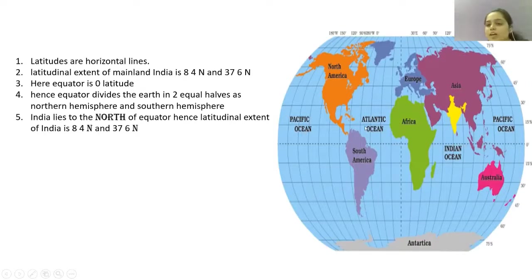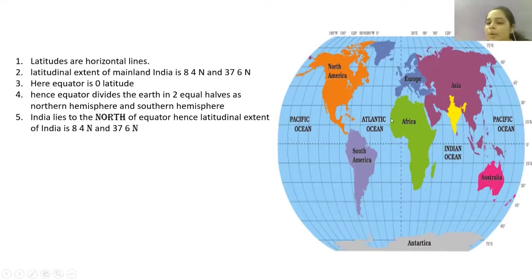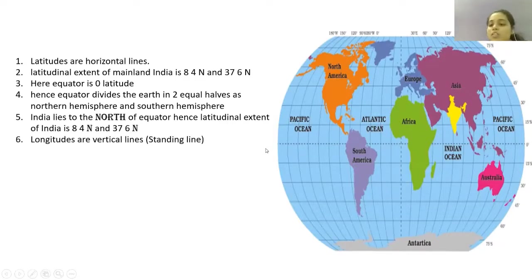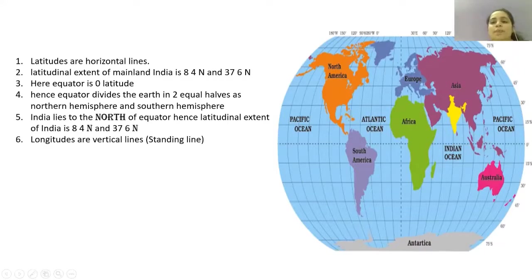India's latitudinal extent is measured in North because India lies above the equator, that is in the northern hemisphere. Now let us talk about longitudes. Longitudes are standing lines — vertical lines. Latitudes were horizontal sleeping lines, and longitudes are vertical standing lines.